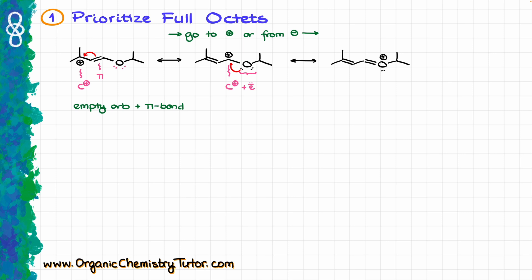At this point I've exhausted all options, because the atom next to my oxygen is sp3 hybridized and cannot be used in resonance. The first thing we do is check for full octets around our atoms — specifically around atoms that do contain the charge. In our first contributor we look at this carbon, for our second contributor this carbon, and for our last contributor we look at our oxygen atom.